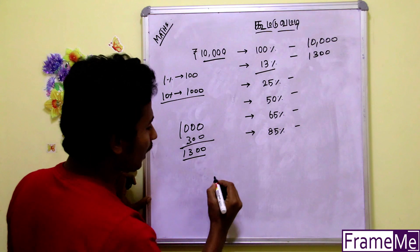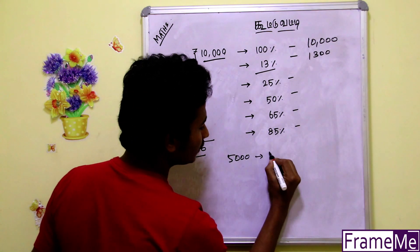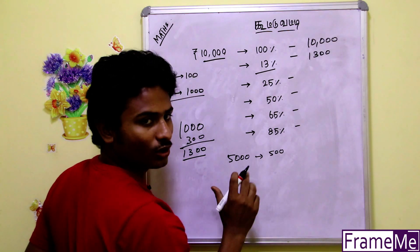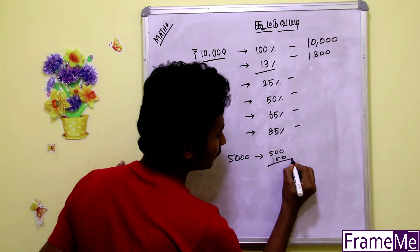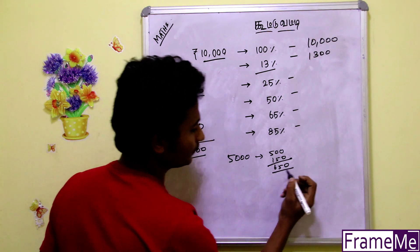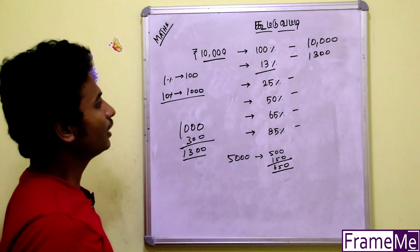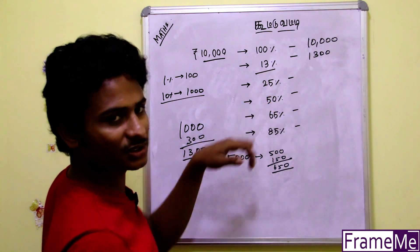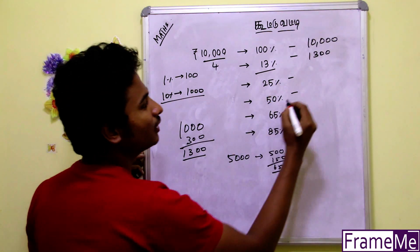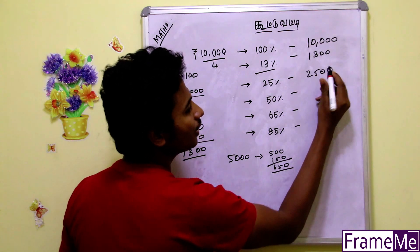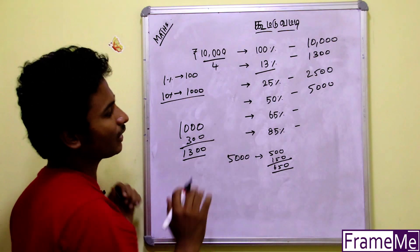This is 50% is 100. 1% is 100. So 3% is 150. 60% is 100. So 13% is 100. This is 25% and 50% is 100. Direct divide by 4. So this is 2500. This is 5000. So this is easy to calculate.